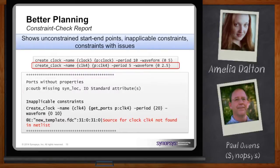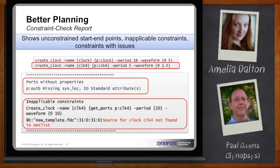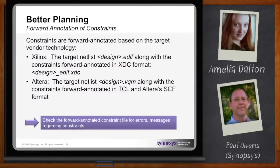After we apply the constraints and run synthesis, we create the forward-annotated constraints which we send to the place and route tool. For example, for Xilinx it's an XDC format, and for Altera it's a VQM format. An important thing is that after we've generated the XDC or VQM constraints, you also want to look at those because we'll also report in these constraint files if there are any issues in trying to actually convert the constraints.